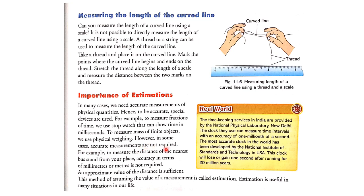However, in some cases accurate measurement is not required. For example, to measure the distance of the nearest bus stop from our place, accuracy in terms of millimeters or meters is not required — an approximate value of the distance is sufficient. This method of assuming the value of measurement is called estimation. Estimation is useful in many situations in our daily life.